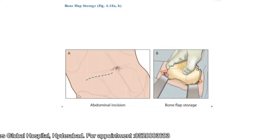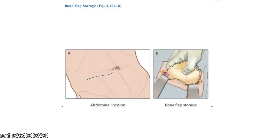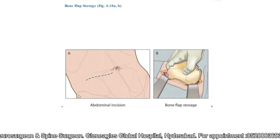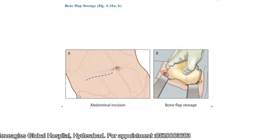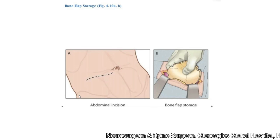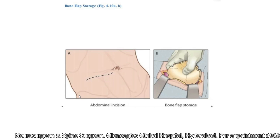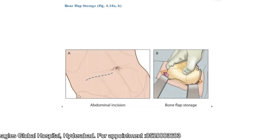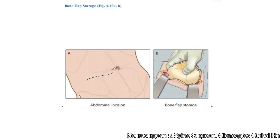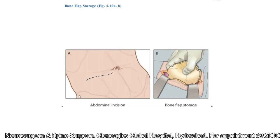With blunt dissection, I develop a proper plane above the rectus sheath and laterally above the obliques. I ensure proper hemostasis and place the bone flap with the convex surface outside. If the patient is very thin and lean and I cannot develop a sufficient pocket, I sometimes divide the bone flap into two pieces and stack them one above the other. What is most important is that once I place the bone flap, there should be no tension in the skin when closing it, as tension may lead to suture failure and necrosis. This completes our technique of decompressive craniectomy.